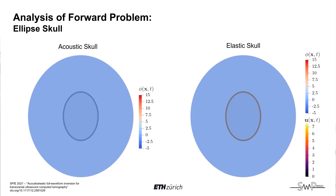Another fairly significant complication introduced by the presence of the skull are the so-called acoustic-elastic coupling effects that we get at the tissue-skull interface. These are effects we get when sound waves travel from a fluid or so-called acoustic medium to a solid or so-called elastic medium. Here we have two relatively simplistic ellipse-shaped skulls where the skull on the left behaves as a fluid or acoustic medium whereas the one on the right behaves as a solid or elastic medium.